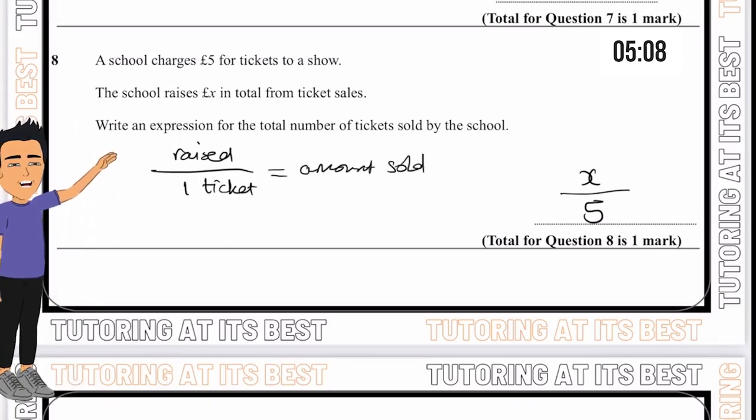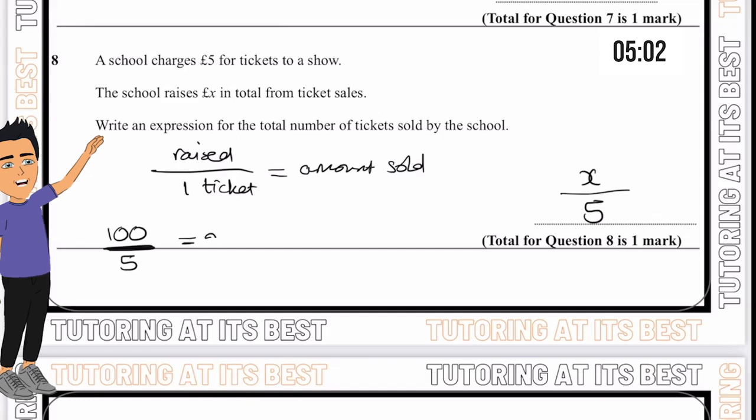We've done the amount raised divided by one ticket, and that will give us the amount sold. Let's say we had a hundred pounds raised. We divide that by five pounds. So now we know there were twenty tickets sold.